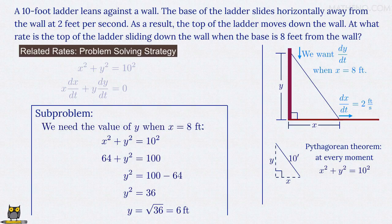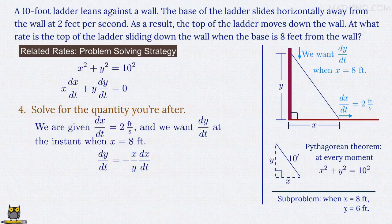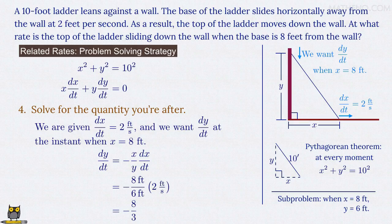So let's put the result over here on the right, and we can return to our main problem and finally find the value for dy/dt by substituting in the various values. We have at the moment we're interested in x equals 8 feet and y equals 6 feet, so we can make those substitutions. And we were given that dx/dt equals 2 feet per second. So now we're just left with multiplication.